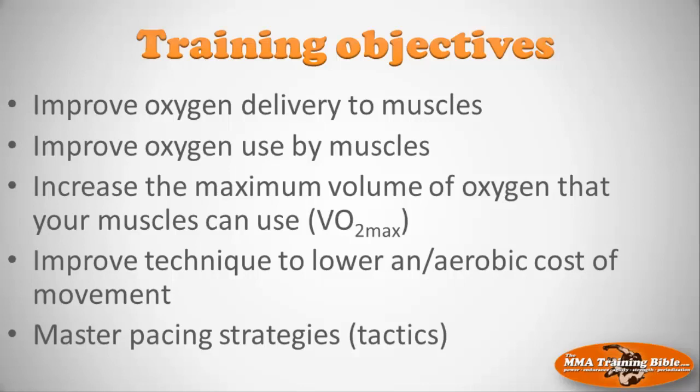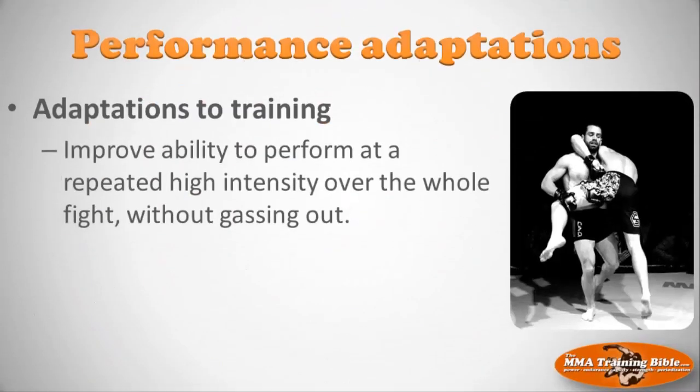What are your training objectives? You want to improve oxygen delivery to muscles, improve oxygen use by muscles, increase your maximum volume of oxygen your muscles can use — that's your VO2 max. You also want to improve your technique to lower the anaerobic cost of movement so you become more efficient, and you want to master your pacing strategy so you're not going out too hard too fast — that's really a tactical decision. If you train this system well, you'll be able to perform at a repeated high intensity over a whole round and a whole fight without gassing out. It's the most important energy system in MMA.